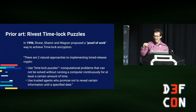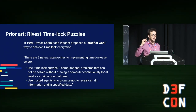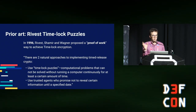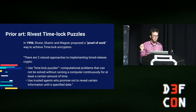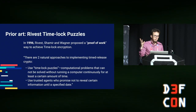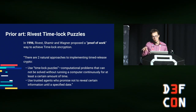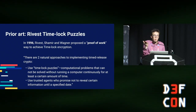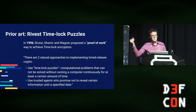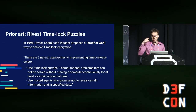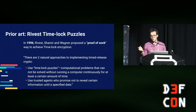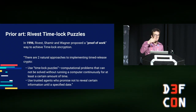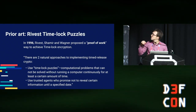The math: a pairing is a bilinear map from two groups G1 and G2 onto a target group GT. Because it's bilinear, the pairing of G1 (the generator) with signature P — where P is the secret times the message in BLS — equals the secret times the pairing of G1 and the message. Anyone can compute the pairing of G1 and the message, and anyone can compute the pairing of the public key with G1. The public key is basically the secret times the generator on G1.